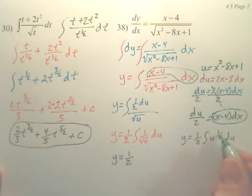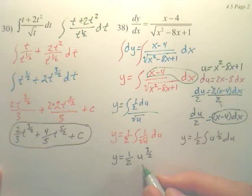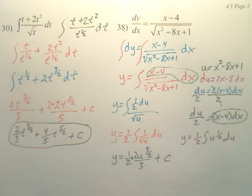Integrate this, you add 1 to that, u to the 3 over 2, and this would be times 2 thirds, plus c.